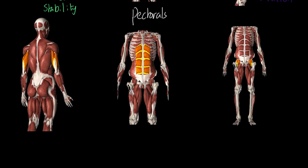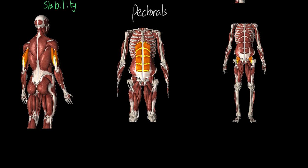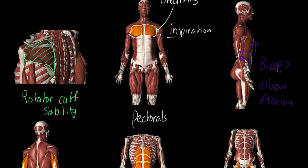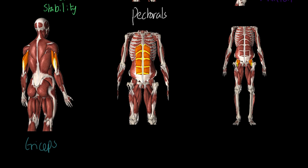At the back of the arm we have the tricep. Notice that this is a muscle pair — the back of the upper arm with the front of the upper arm, which is the bicep. The tricep inserts down on the ulna, where it connects to the forearm. When this muscle pulls and shortens, it straightens the elbow. We call that elbow extension.